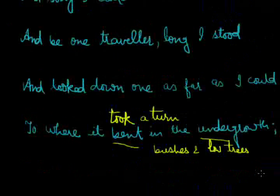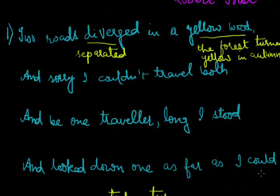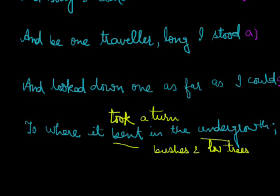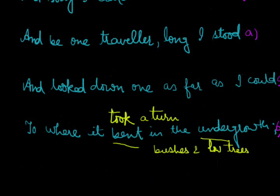I want to ask: what is the mood of the poet in these lines? The mood of the poet is serious. The rhyme scheme of this stanza is A-B-A-A-B: 'would' (A), 'both' (B), 'stood' (A), 'could' (A), 'undergrowth' (B).